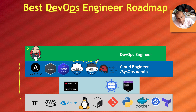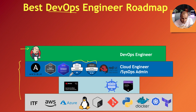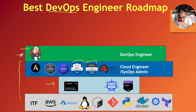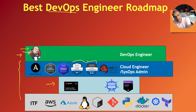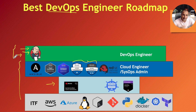Once you understand what a pipeline is and how to automate its steps, learning a second or third CI/CD tool only takes a week to ten days. That's why I couple DevOps with cloud engineering. During your learning journey, you can apply for junior Linux administrator jobs, then cloud engineer roles, and then DevOps engineer roles on AWS and Azure. The delta effort is only about a month to six weeks extra.